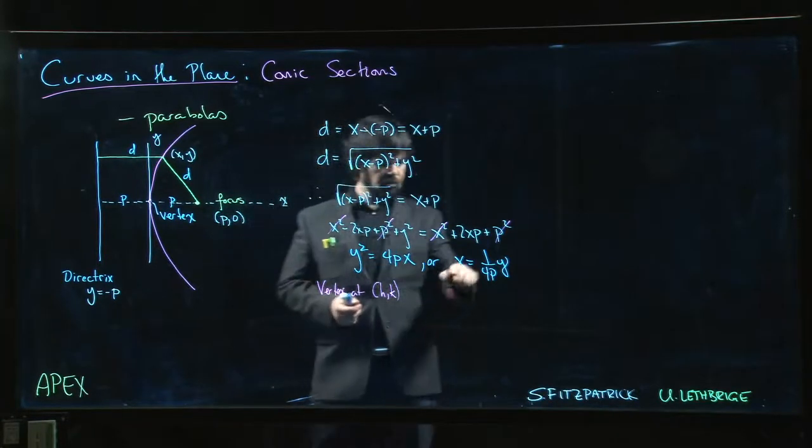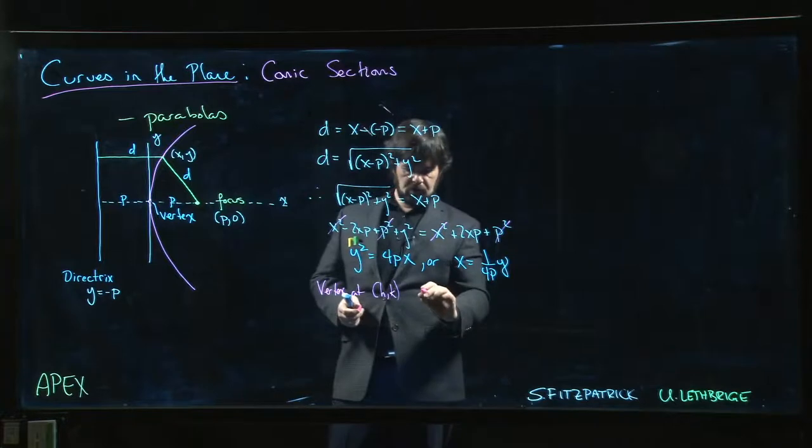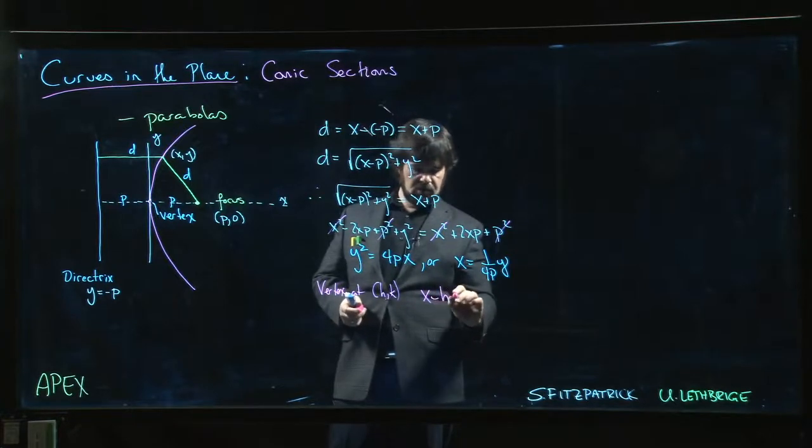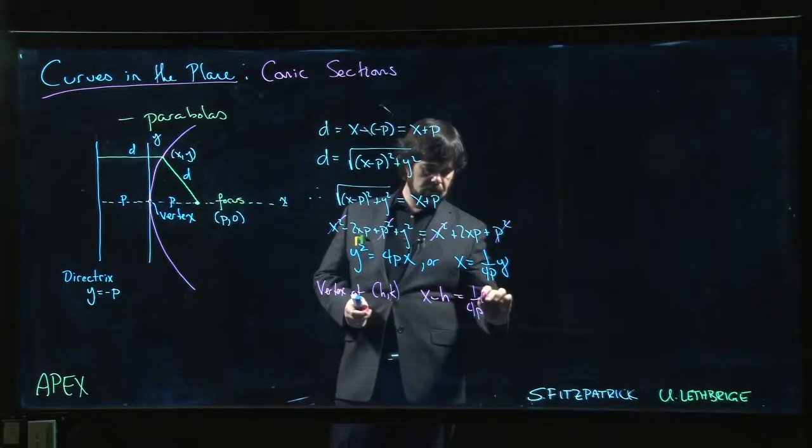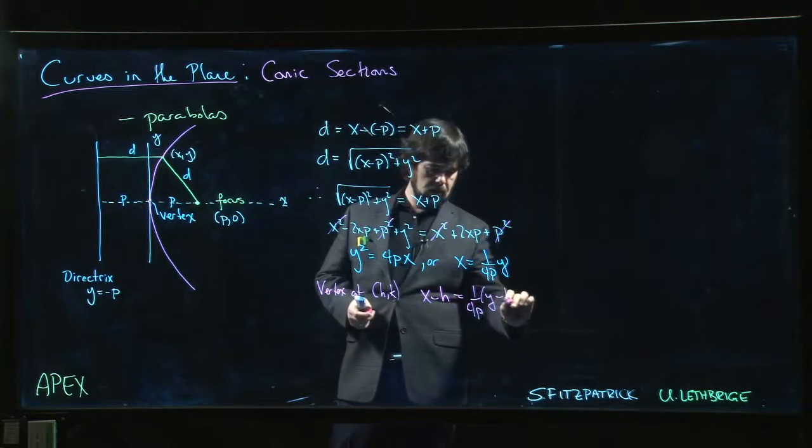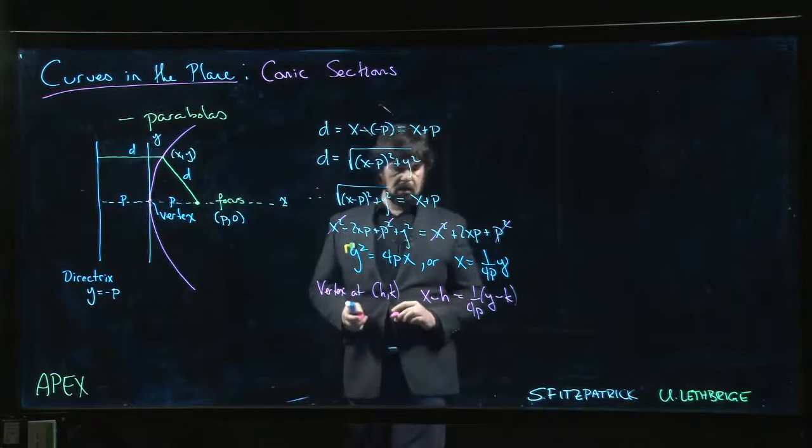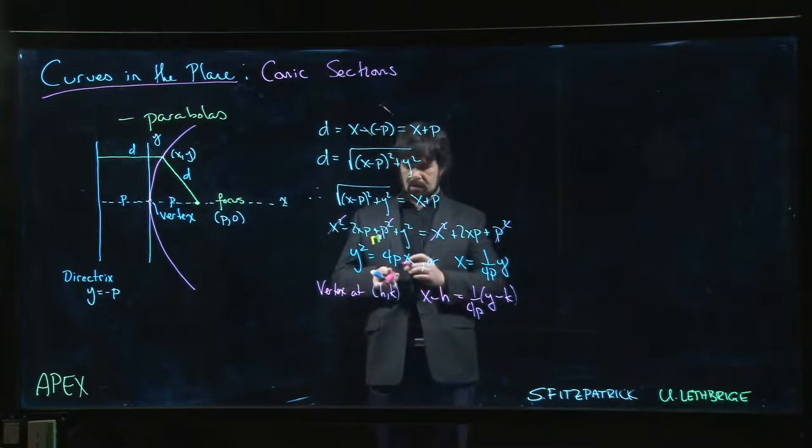We have to shift x and y by those values. So x minus h would be 1 over 4p times y minus k squared. So you can just shift simply like that and you get the result.